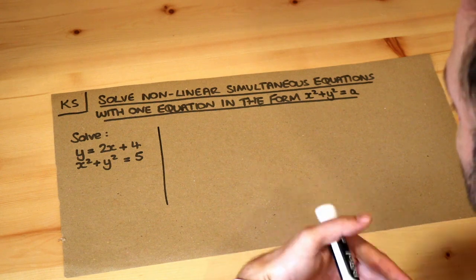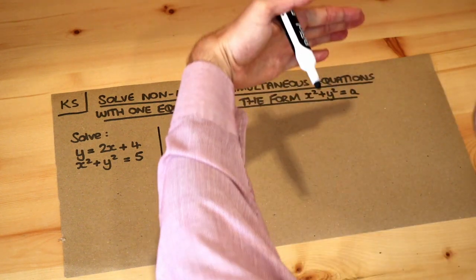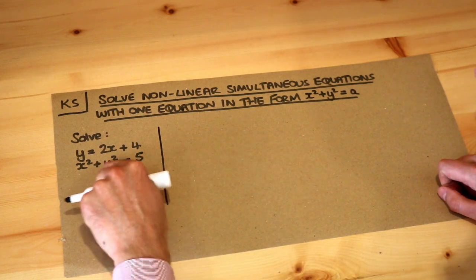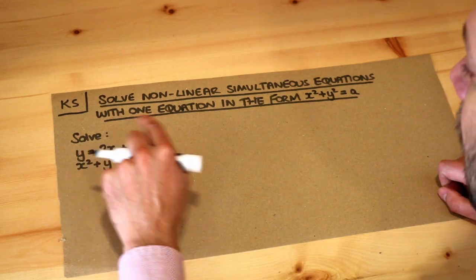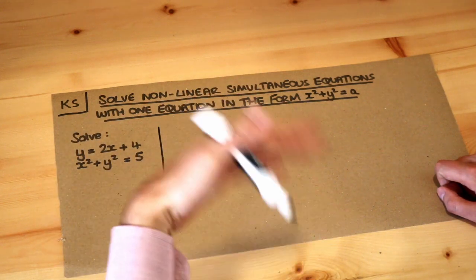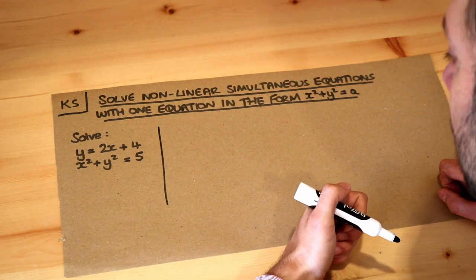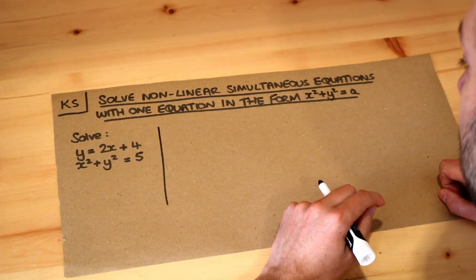We can't use elimination where we add or subtract the simultaneous equations. The reason is because one of these equations has an x squared in it and the other doesn't, so there's no way you could add or subtract the equations to make the x squared term disappear or the y squared term disappear.